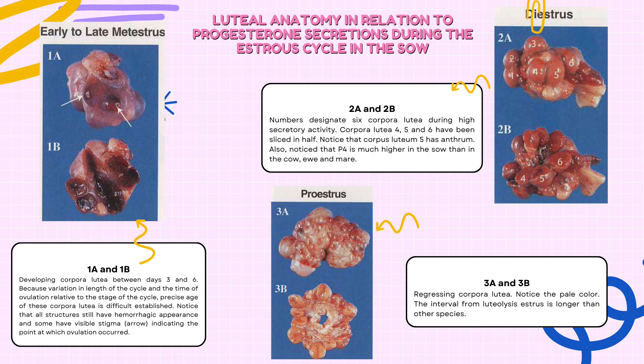In early to late metestrus, the developing corpora lutea are between days 3 and 6. Because of variation in the length of the cycle and the time of ovulation relative to the stage of the cycle, the precise age of these corpora lutea is difficult to establish. Notice that all structures still have a hemorrhagic appearance, and some have a visible stigma (arrow) indicating the point at which ovulation occurred. In diestrus, numbers designate 6 corpora lutea during high secretory activity. Corpora lutea 4, 5, and 6 have been sliced in half. Notice that corpus luteum 5 has an antrum.